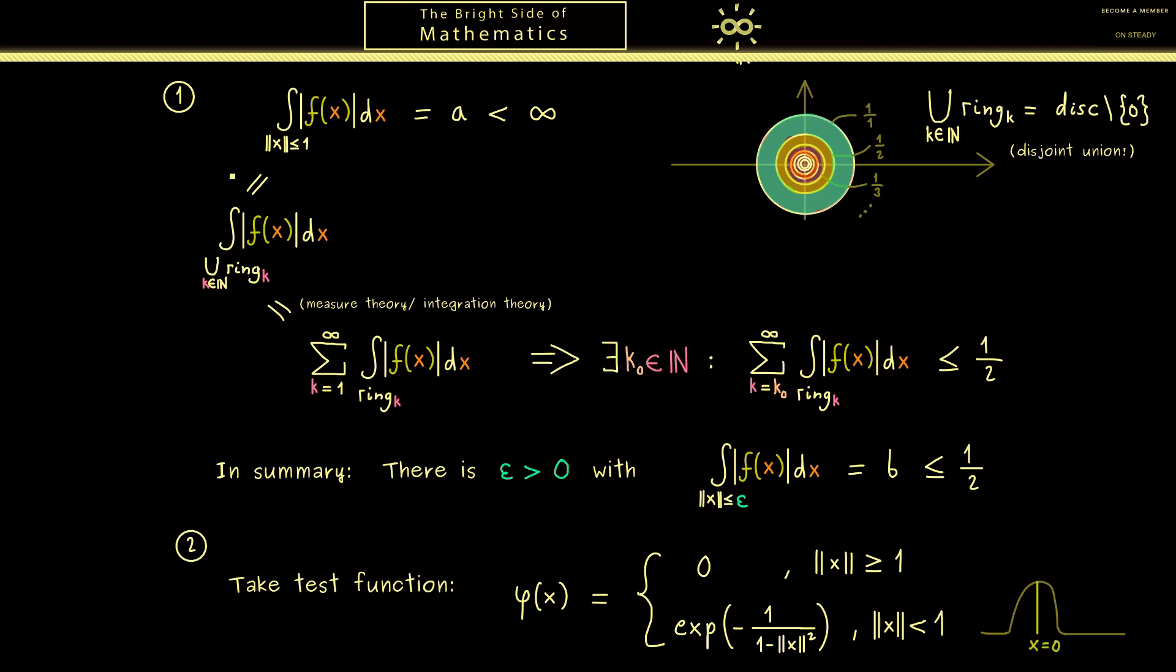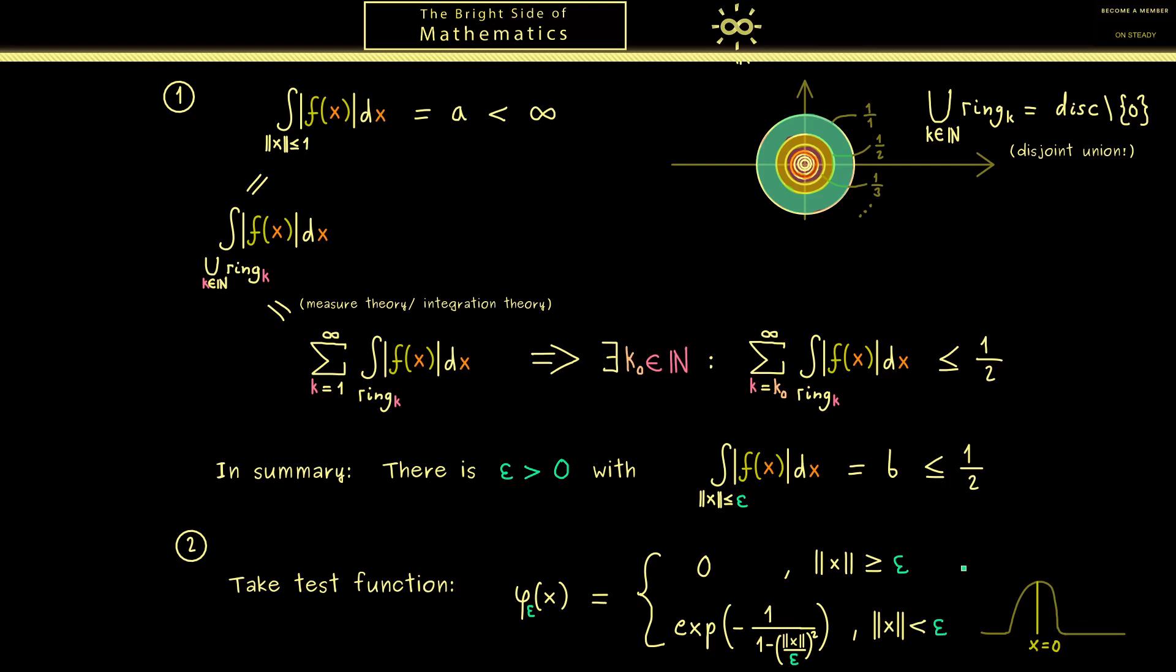Okay now you already know from the first part the unit ball might be not small enough. Therefore we should take this epsilon ball here. Therefore I would say let's change the function φ a little bit with this epsilon. It should be 0 outside of the epsilon ball and inside it should be the same exponential function. Therefore also inside the exponential function we have to divide by epsilon. And then you see this was just scaling the whole test function. Everything looks exactly the same just zoom to the epsilon ball instead of the unit ball.